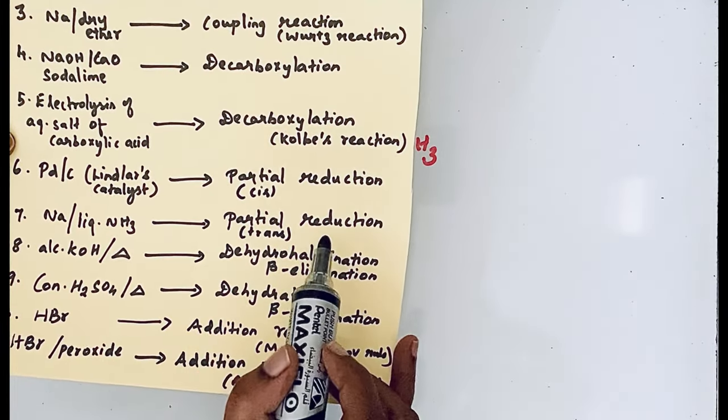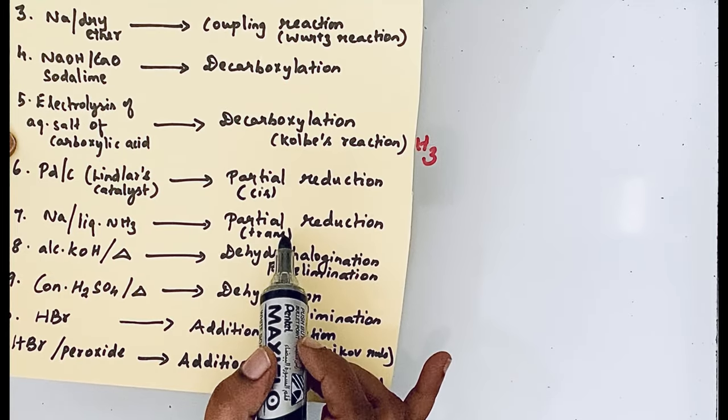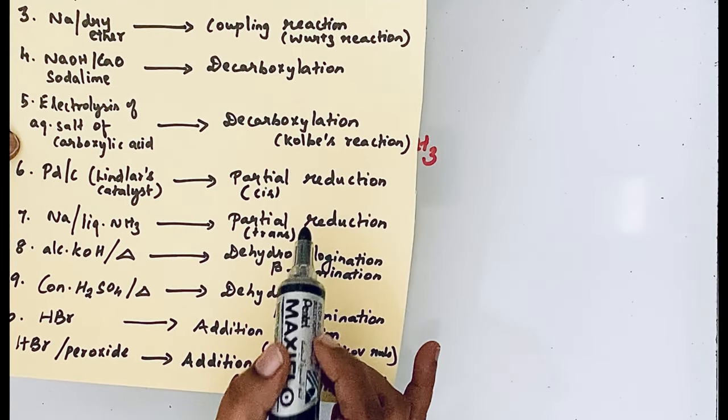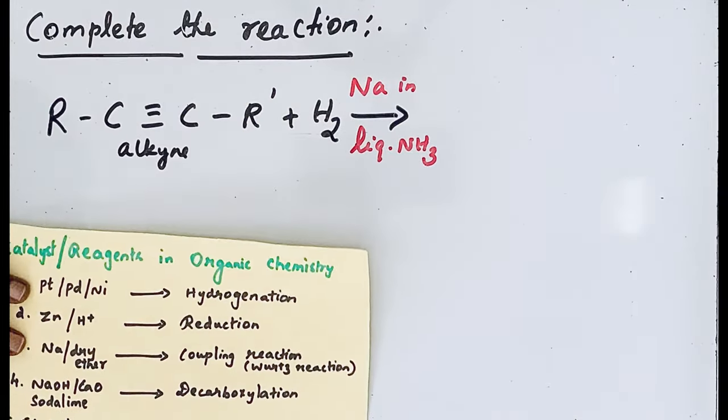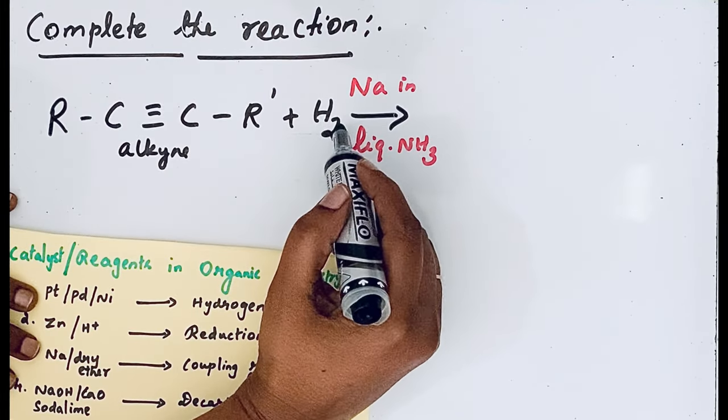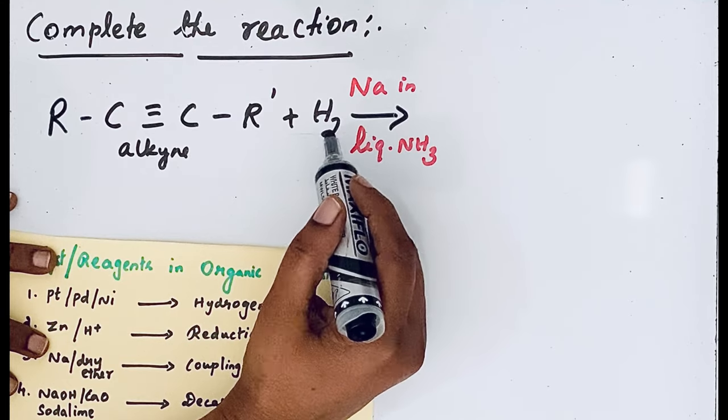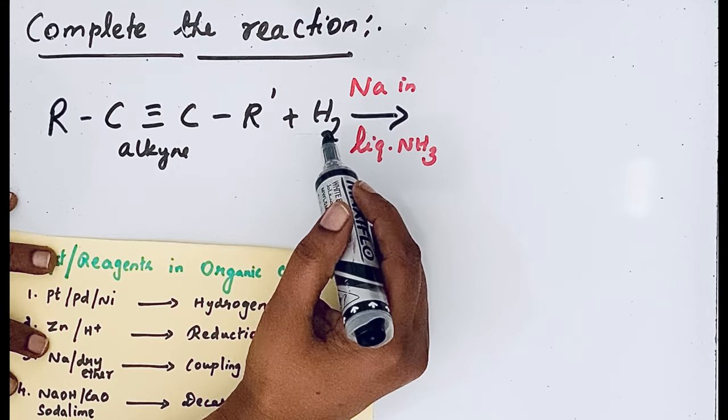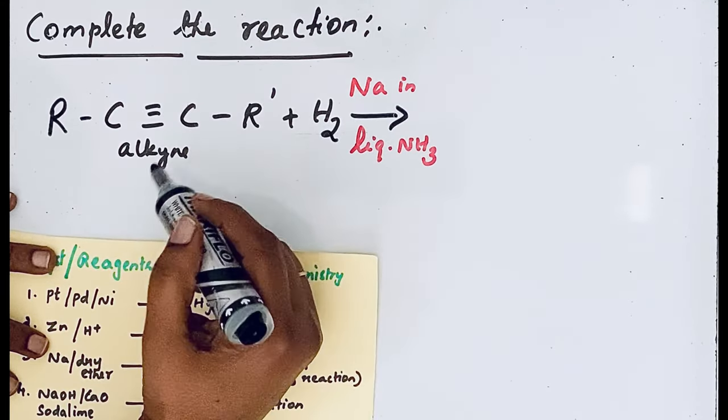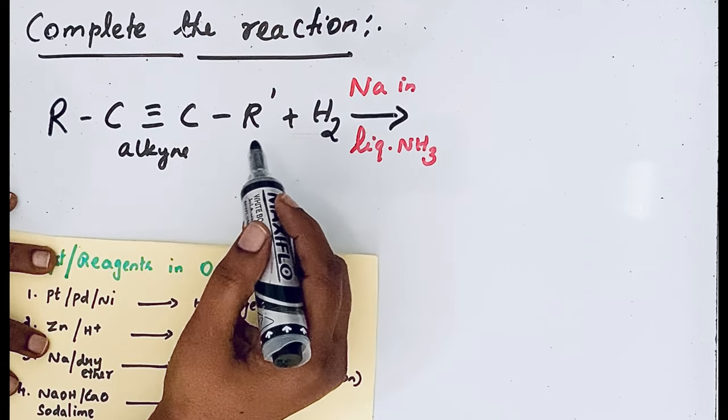Sodium in liquid ammonia produces partial reduction to the trans isomer. Sodium is a good reducing agent, so addition of hydrogen is reduction. In partial reduction, the formation of alkane is controlled. That means alkyne can be converted into alkene.